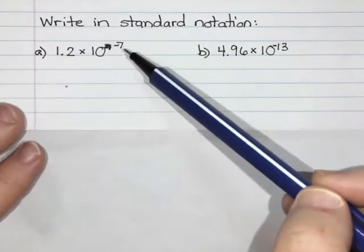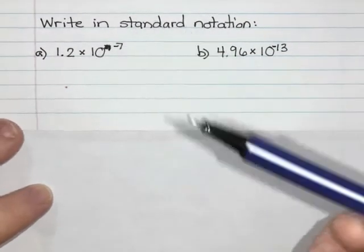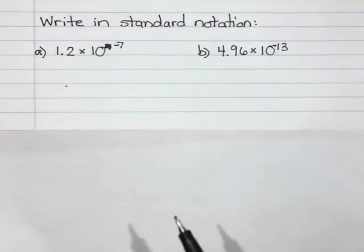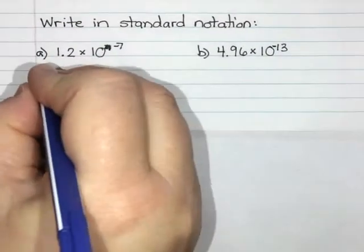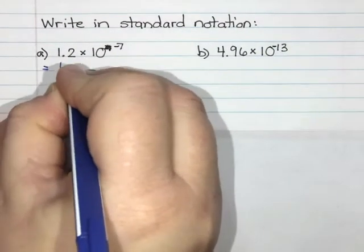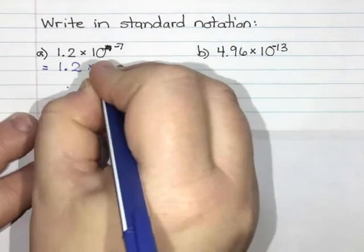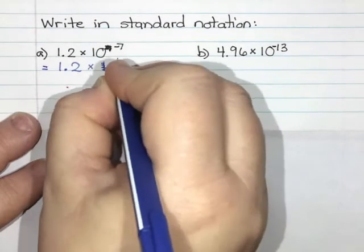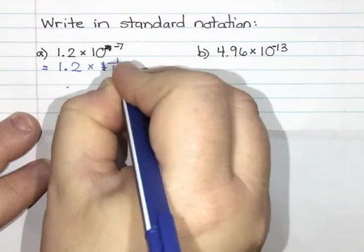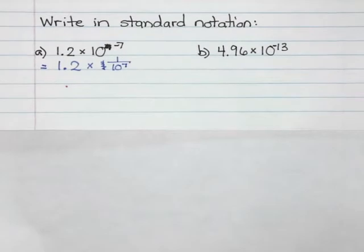So 1.2 times 10 to the negative 7. A negative exponent makes a fraction, so this would be the same as 1.2 times 1 over 10 to the power of 7, right?